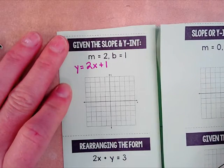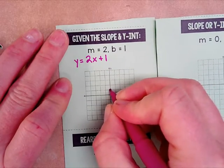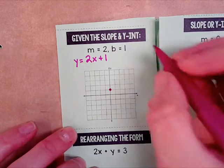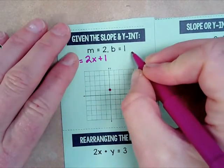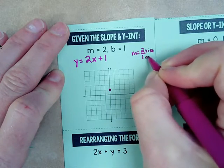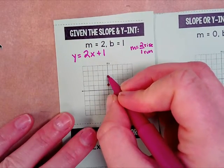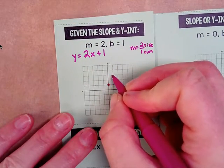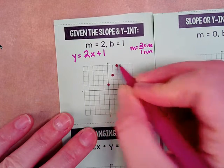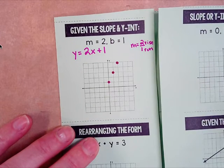The first thing you do is your y-intercept — go to your y-axis and plot a point at 1. Then count your rise over run. m is 2 over 1, so you're going to rise 2 and run 1 to the right. Rise 1, 2 — run 1 — put a point, and do that again: rise 1, 2 — run 1.